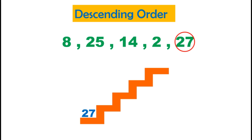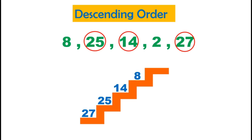Now amongst the remaining numbers, the biggest is 25. Amongst 8, 14, and 2, the biggest is 14. Now between 8 and 2, the bigger number is 8. We are only left with one number, which is 2.